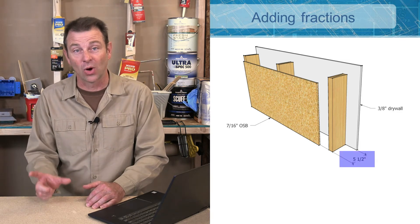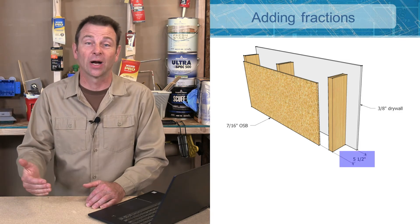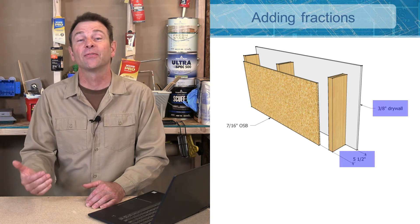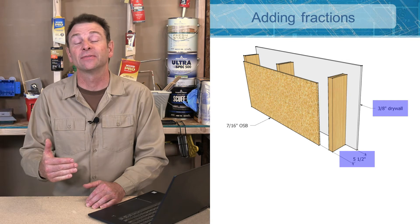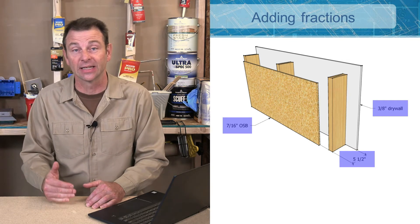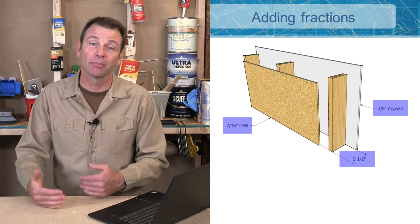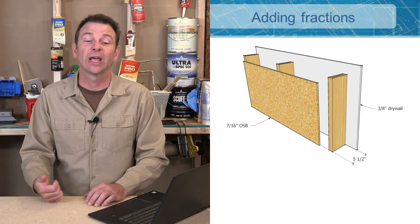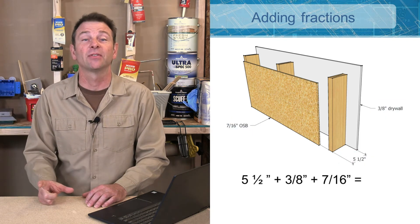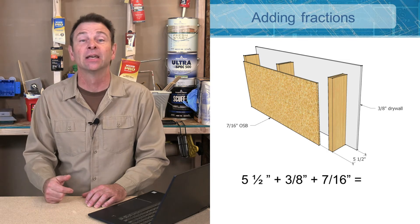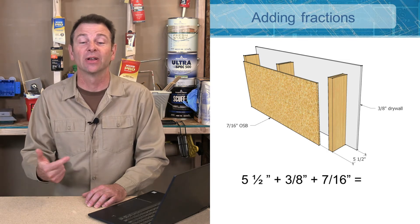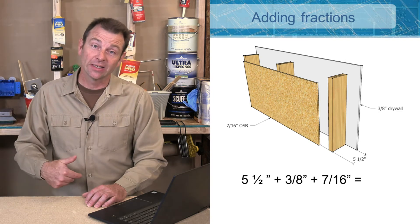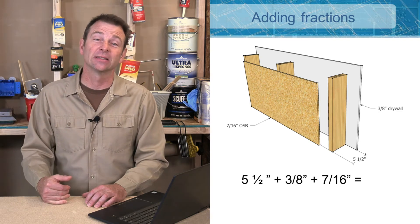You have drywall added on that's three-eighths thick, and then for this exterior wall you're going to have seven-sixteenths OSB on the outside. The question is: when we put all those together, what is the total dimension? We have to take our five and a half inches of the stud, add three-eighths of the drywall, and then add the seven-sixteenths of the OSB. We need all of these fractions to share a common denominator.